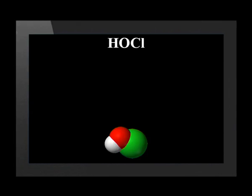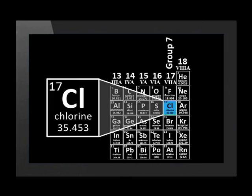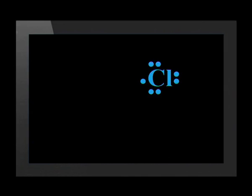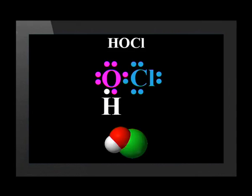The formula of hypochlorous acid is HOCl. Chlorine is in group 7. A chlorine atom has seven valence electrons and a valency of one. The chlorine atom's unpaired electron pairs with one of oxygen's unpaired electrons. And a hydrogen atom's unpaired electron pairs with oxygen's other unpaired electron to form a molecule of hypochlorous acid.